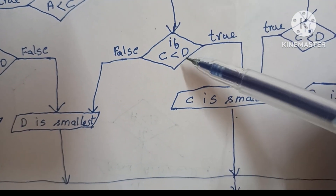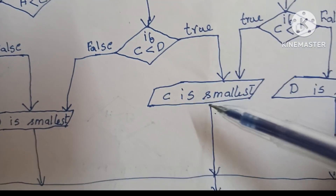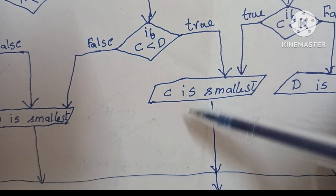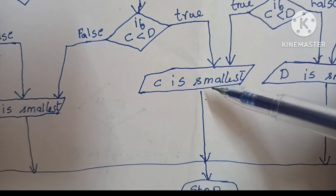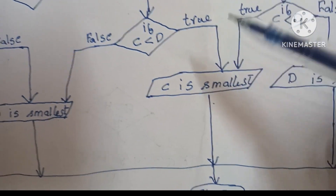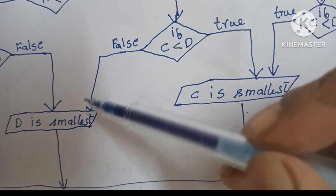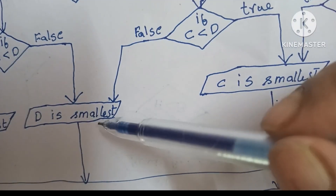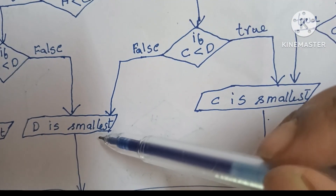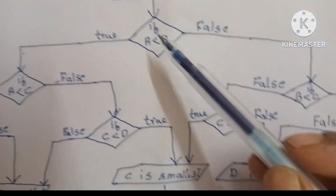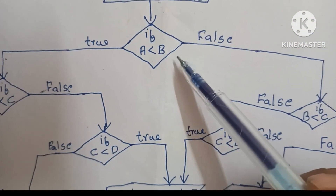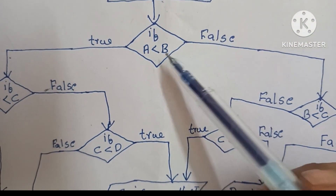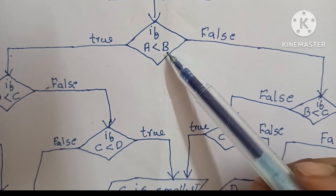If C less than D is true, we print C is smallest. We also print D is smallest when that condition is false. If A less than B is false, D or B may be smallest.